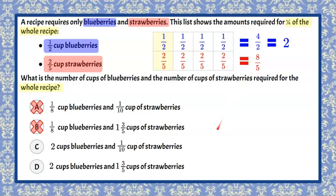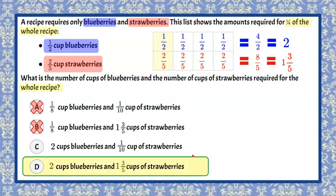We can rewrite this as a mixed number. Five goes into eight once with three left over. So one and three-fifths is equivalent to eight-fifths. So let's go look at our C and D answer choices. So C says one-tenth of a cup. D is, here's our two cups of blueberries and our one and three-fifths cup of strawberries. So we can say that our answer choice here is D to make the whole recipe.